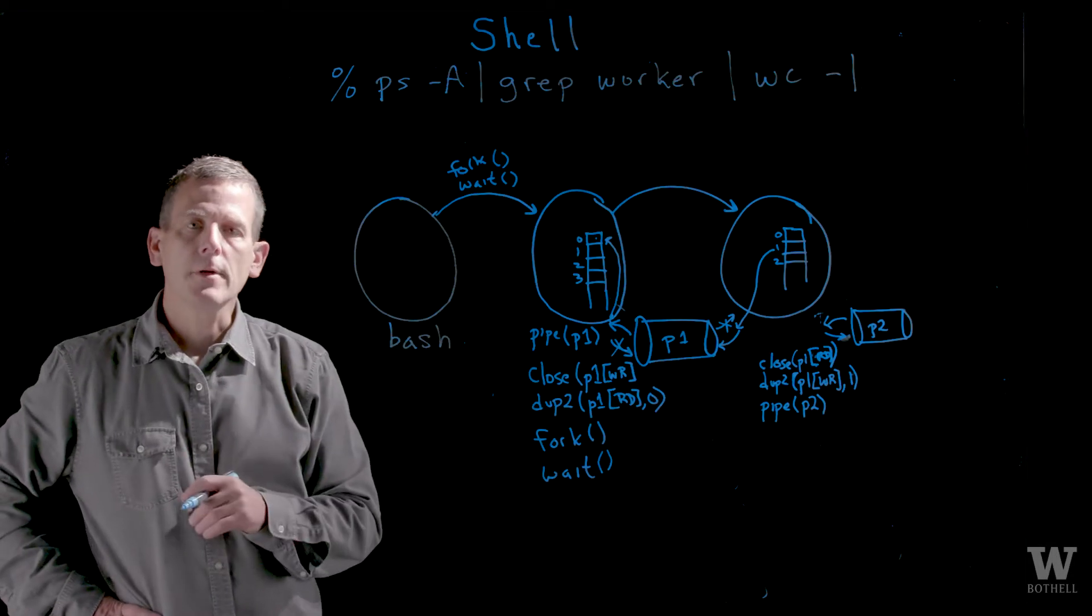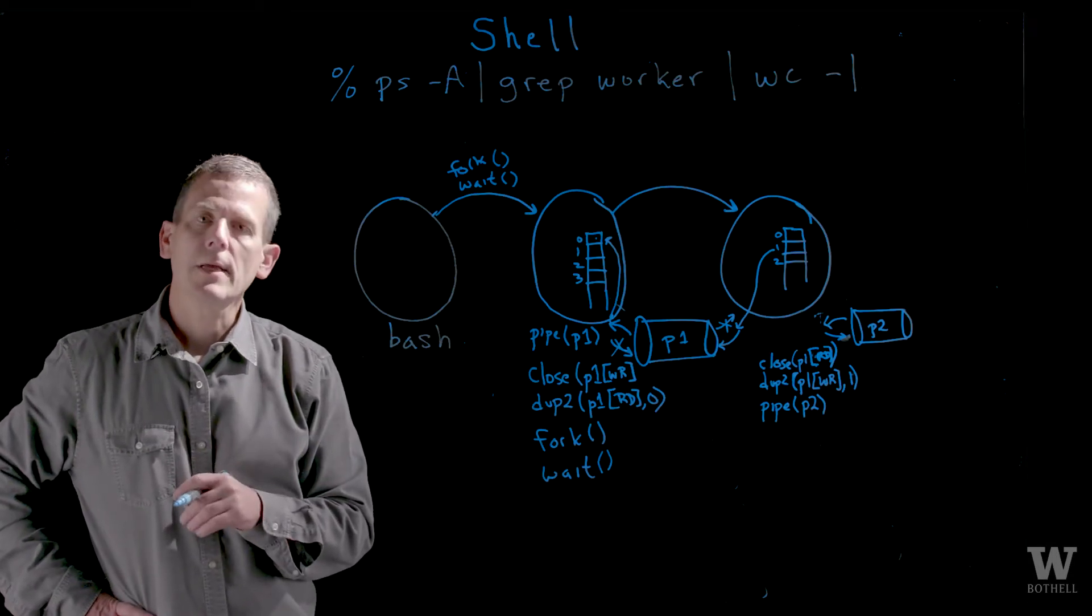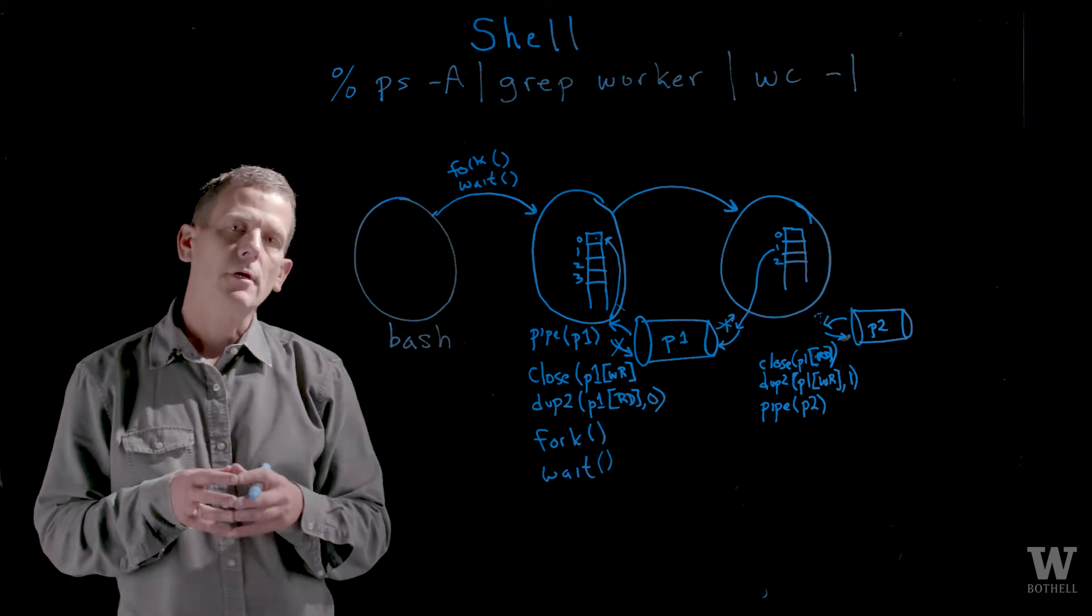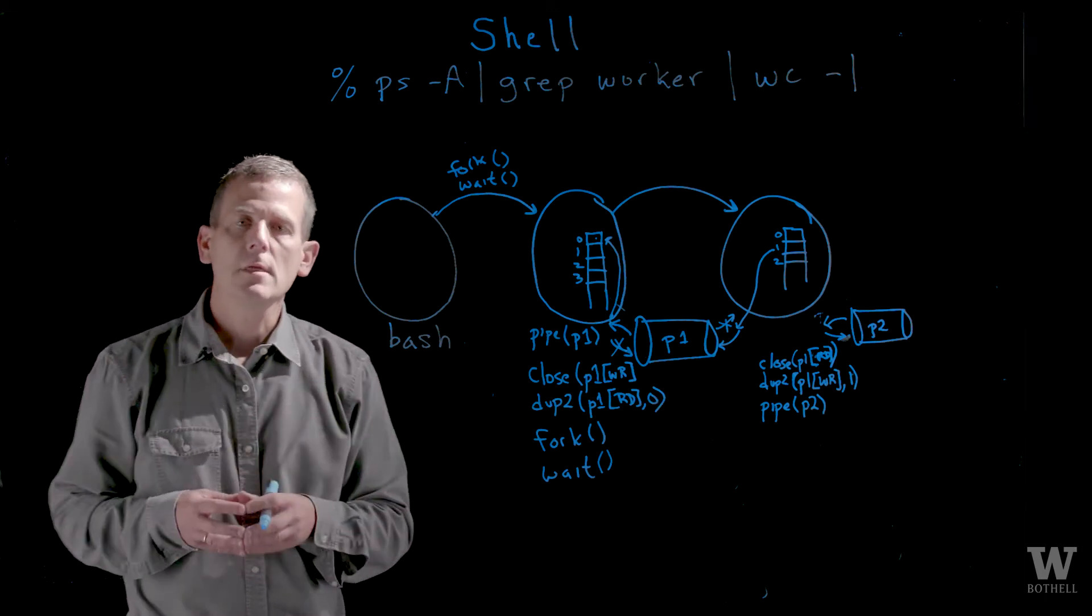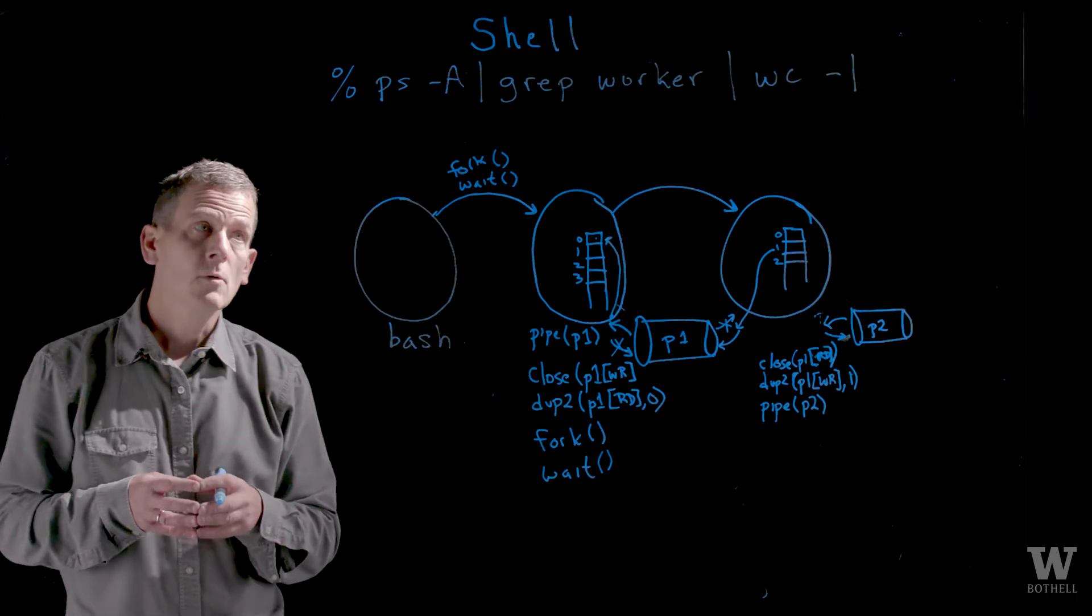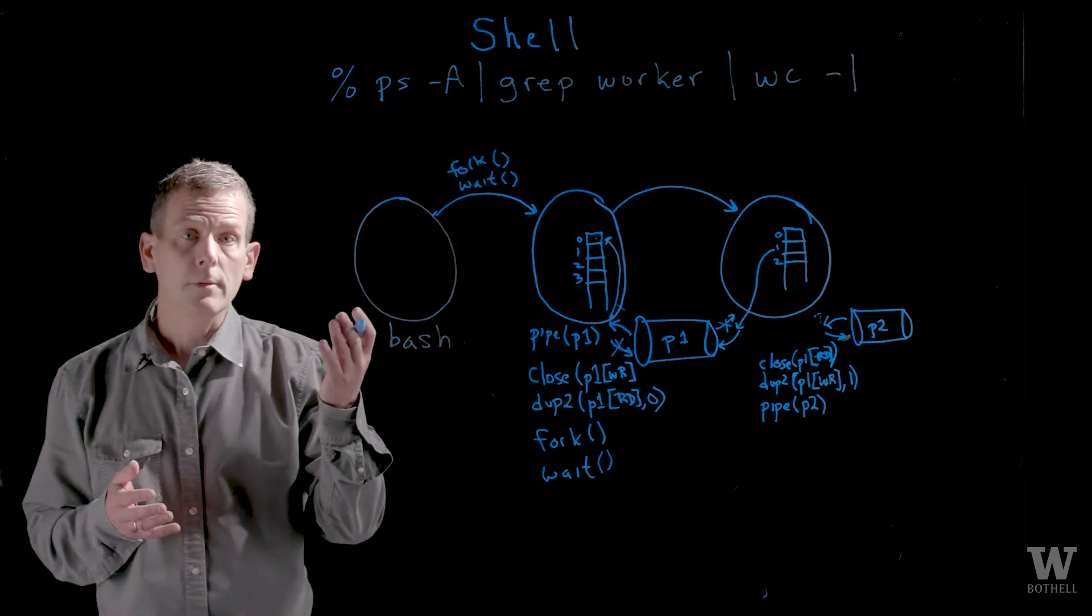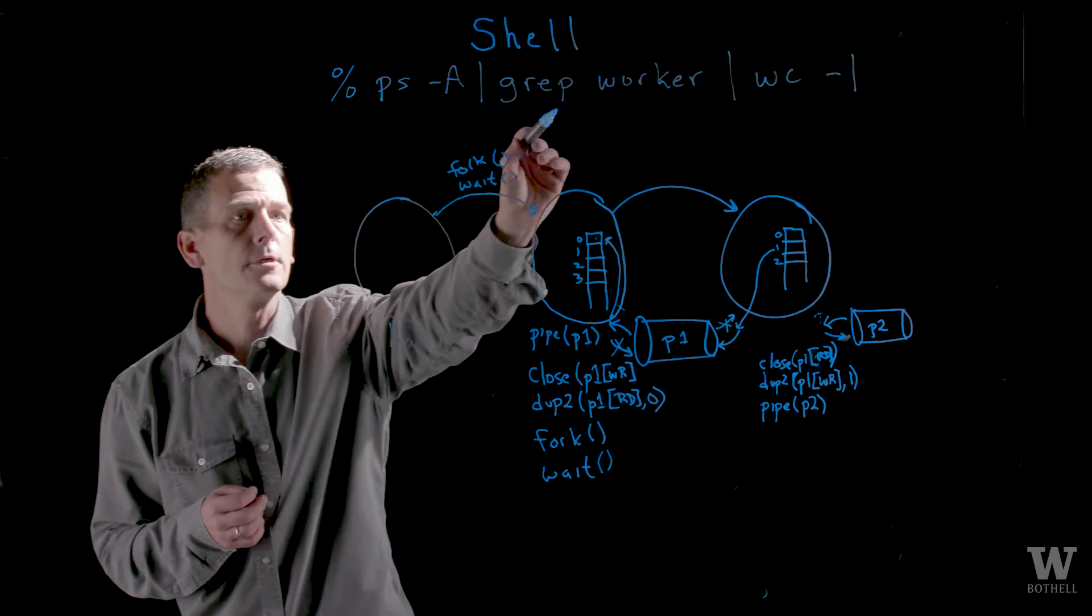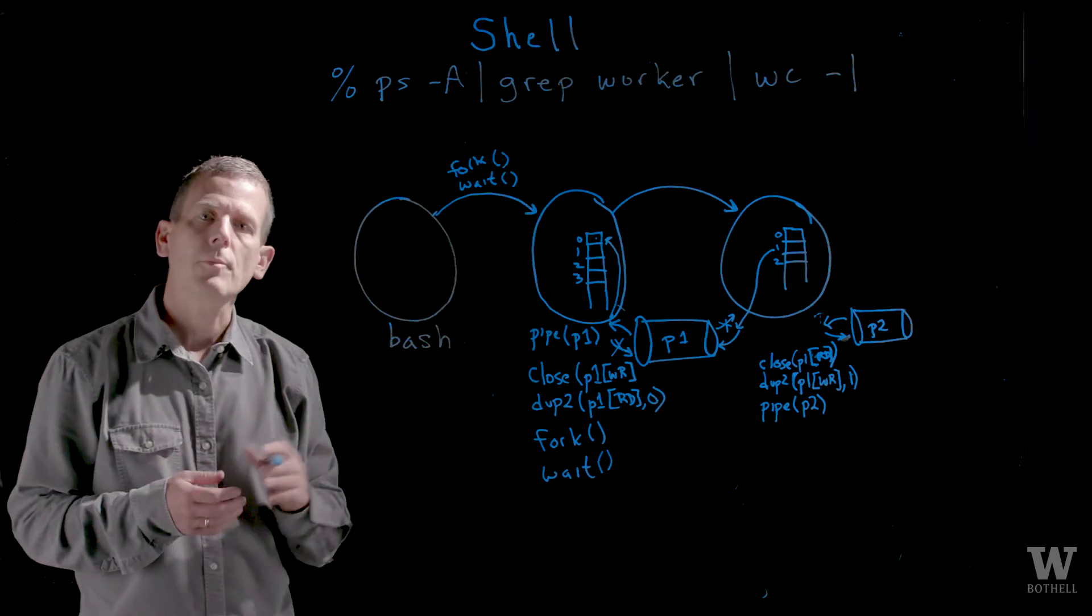Hi. This will be the third part of three videos describing how the shell executes processes and pipes its output into the input of another process. We've done an example where we've piped ps-A output into a grep. Let's extend it to one more process.